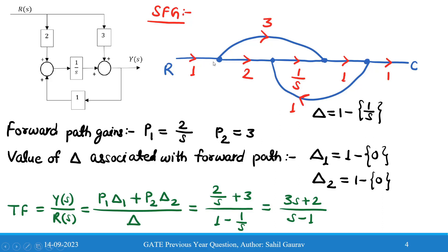Starting the conversion: from node R, with gain 1, two paths come out — one with gain 2 and another with gain 3. The path with gain 2 goes to the summation block node, and the path with gain 3 goes to the next summation block node, with gain 1/s between the two summation blocks. That summation block connects to the output with gain 1. There is a feedback path with gain 1 coming back to the summation block. If it were a negative feedback path it would be represented as minus 1.